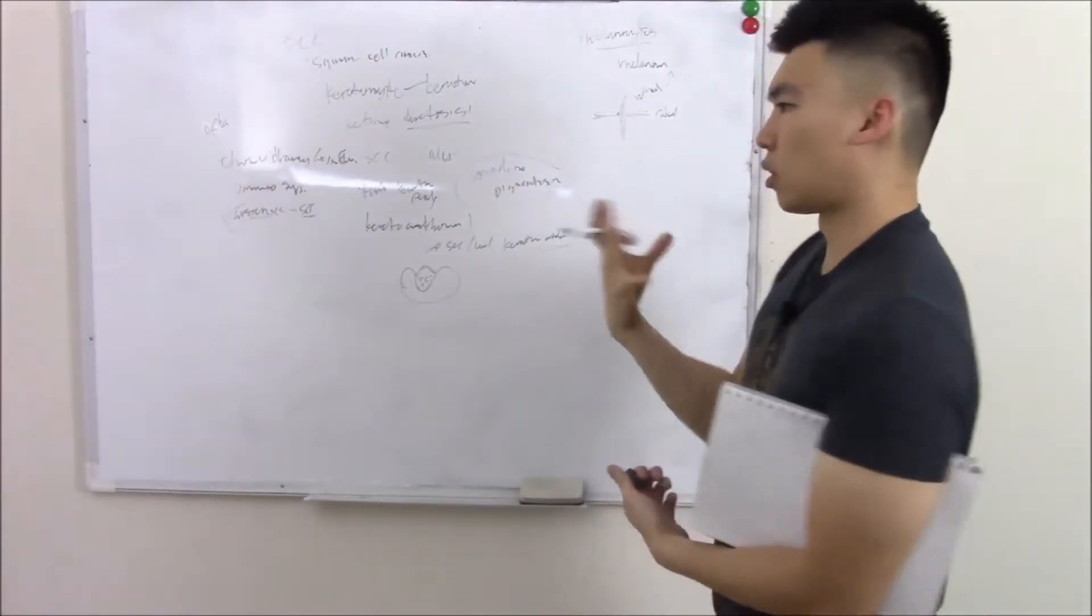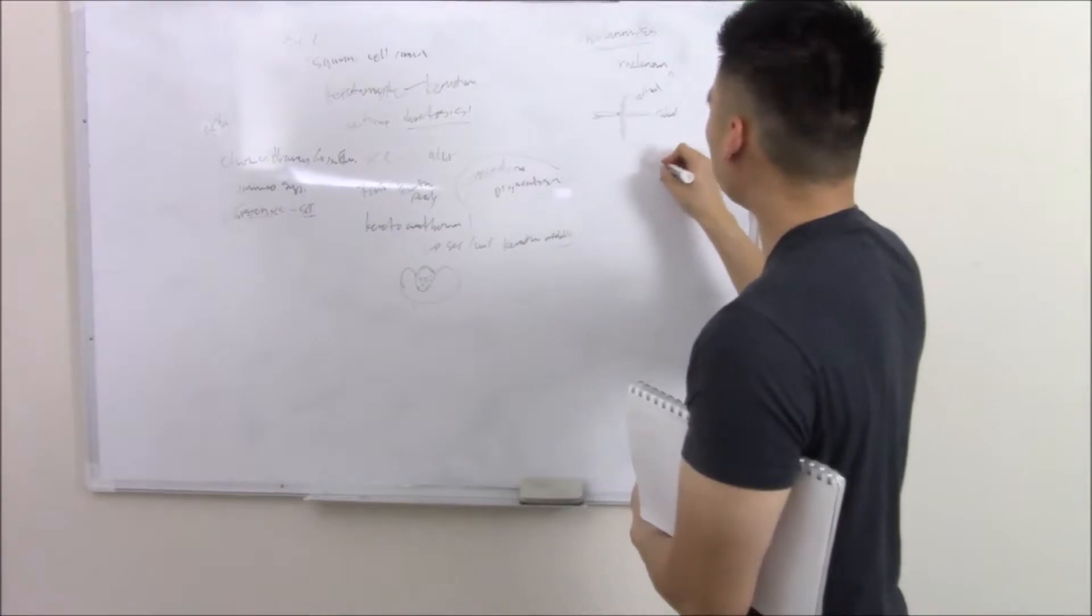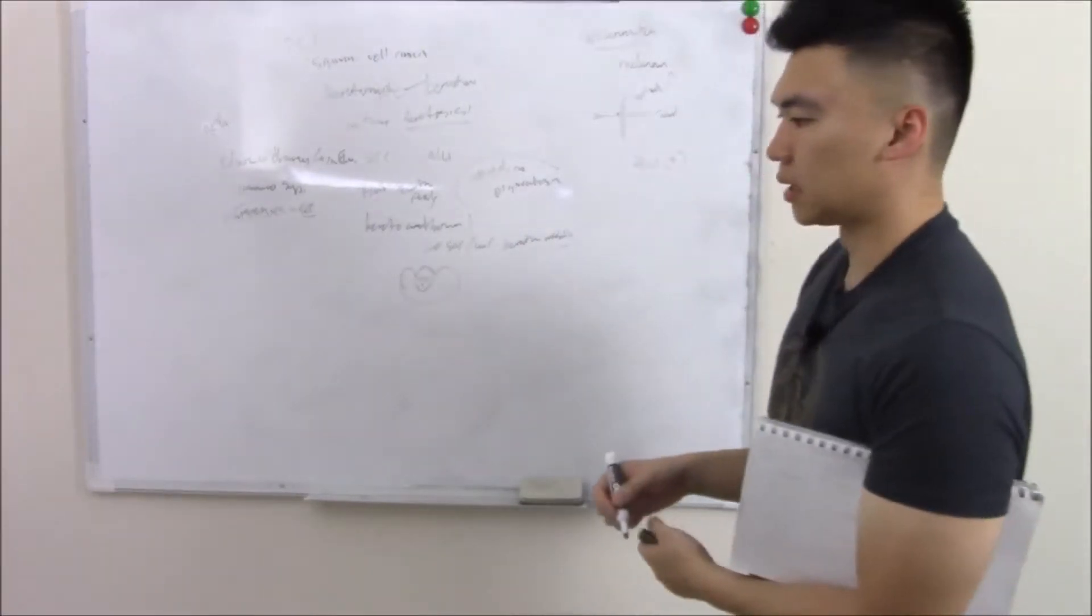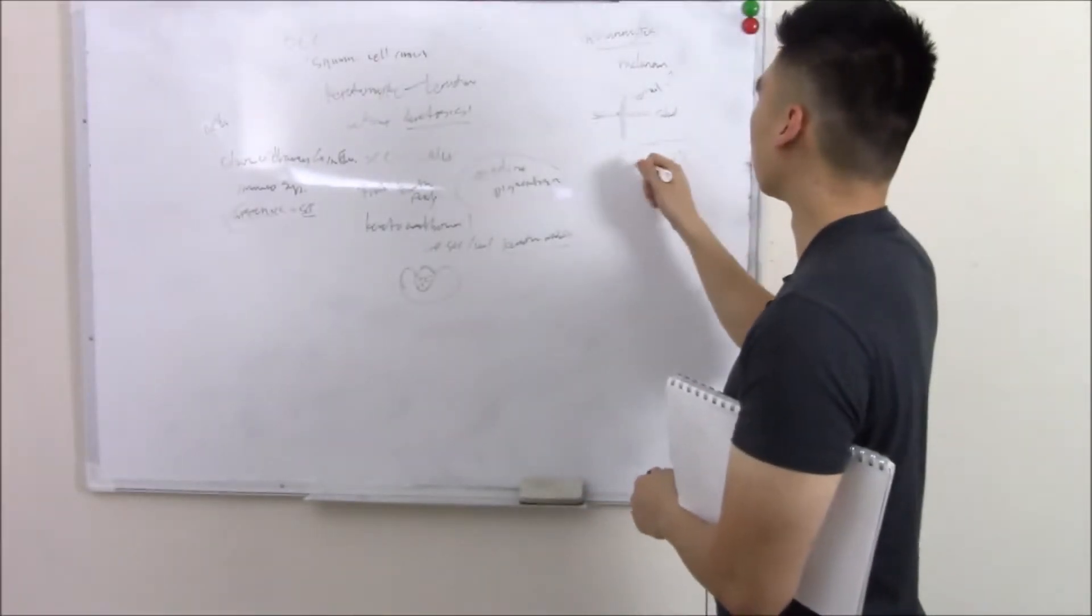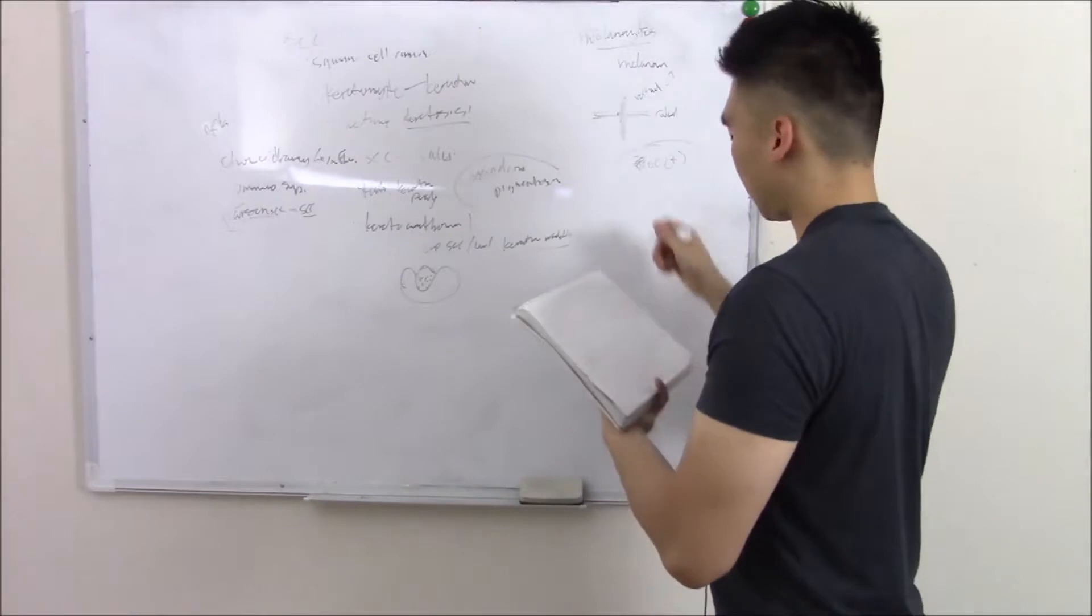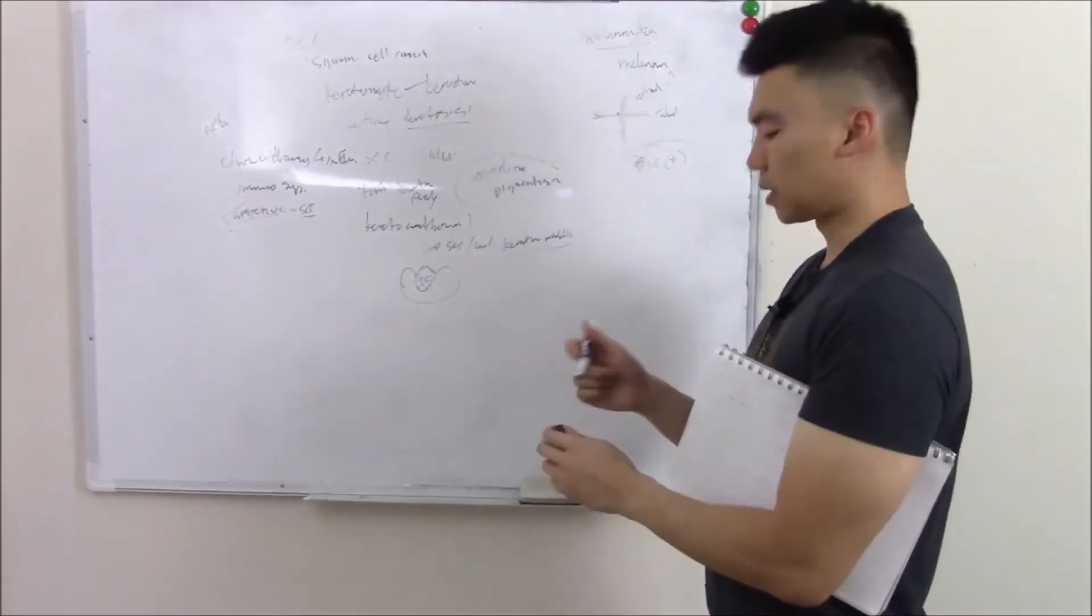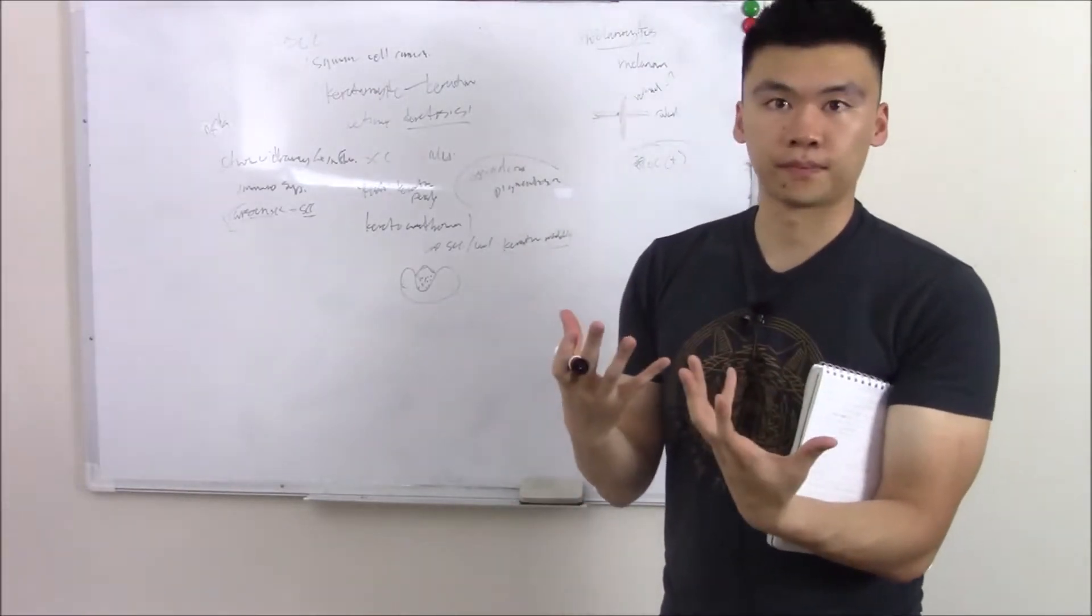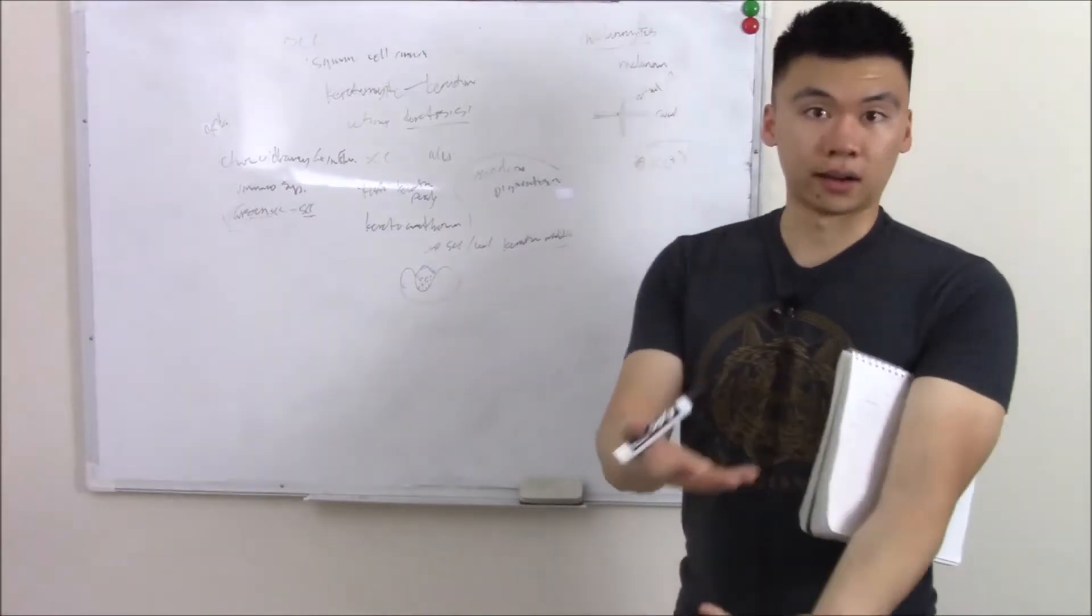One thing you should also know, because they're from neurocrest origins you can stain them with neurocrest stains. So they're S100 positive. They can come from moles, nevis, especially if that mole has mutated, undergone dysplasia. How can you tell if that mole is mutated? Well, I have moles. How can I tell if that mole is mutated?